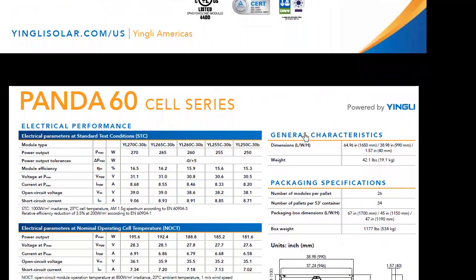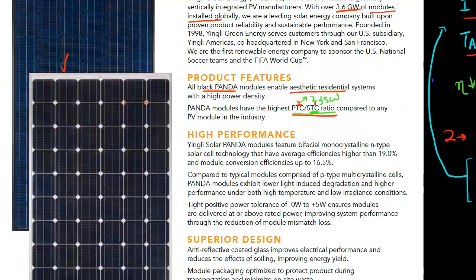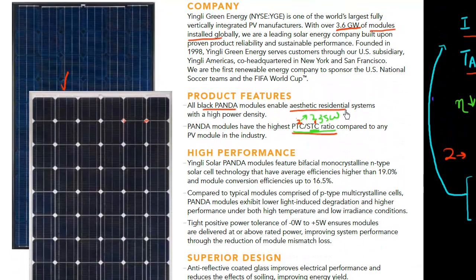So this STC rating is often given in the datasheet itself. So it says that under standard test conditions, the maximum power for this panel is 270 watts. So the PTC to STC ratio is essentially 235 divided by 270. So this is not that shabby. It's close to 90% over here.